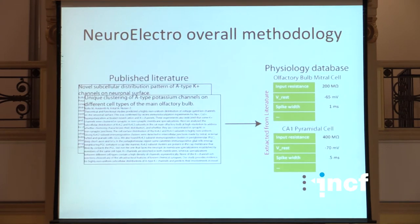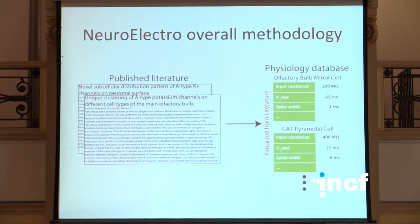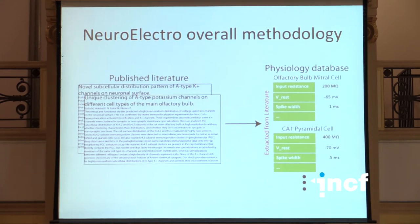The overall methodology of NeuroElectro is: we download tens of thousands of papers from the published literature using scripts. From those papers, we try to extract structured information about the electrophysiology properties of different neuron types. For example, for CA1 pyramidal cells, we extract the actual electrophysiology property values for properties like input resistance, resting potential, spike width, and so on. We want to put this data into a central database for use in data analysis and adding data to models.